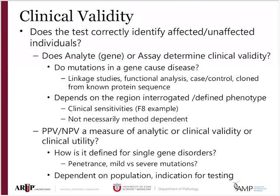How do we know that mutations in a gene cause disease? Mainly because of linkage studies with large families, functional analysis, and some case-control studies. But truthfully, most have come from cloning the gene — at first from a known protein sequence, and then by family studies. So we can identify genes even when we don't know what the protein is. The clinical validity is going to depend on what regions you interrogate as well as how you define the phenotype.